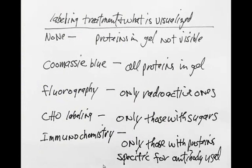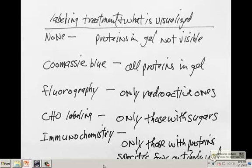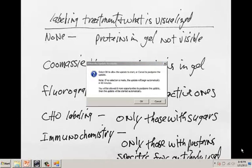Labeling techniques and what's visualized. If you run a gel, do not stain it, you will not be able to visualize the proteins. If you stain it with Coomassie Blue, it will stain all the proteins on the gel. If you use fluorography, it will label only the radioactive ones. This is a type of autoradiography to detect these.